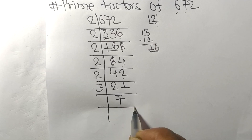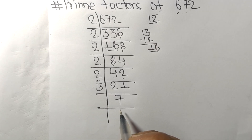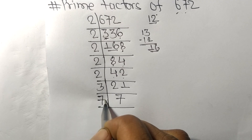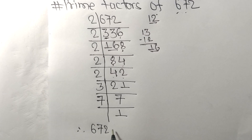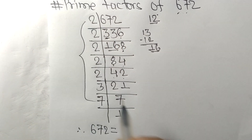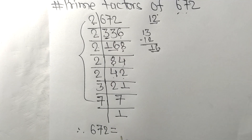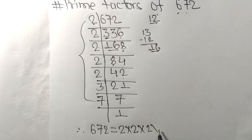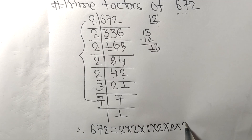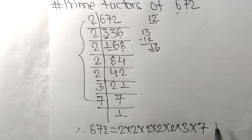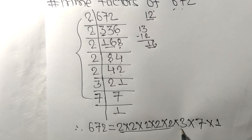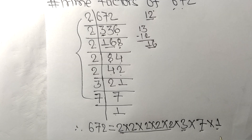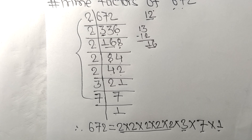Now we got seven, which is a prime number, so it is divisible by seven itself and we get one. Therefore 672 equals two to the power of five, then three, and then seven. So two, three, seven, and one are the prime factors of 672. That's all for today, thanks for watching.